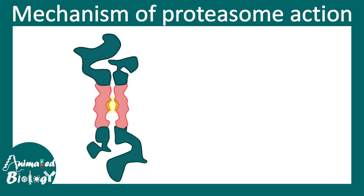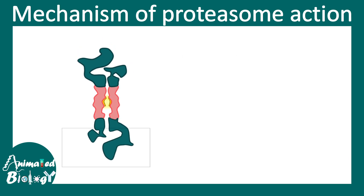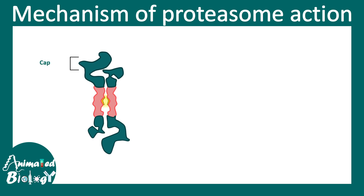Here is a cross-section view of the proteasome where we can zoom in and see that the head of the proteasome has a cap which recognizes the polyubiquitinated protein and channels and unfolds it. The protein is threaded through the catalytic core. The cap recognizes the protein, the unfolding ring unfolds it from its native structure, and the central cylinder contains the catalytic core shown in yellow.